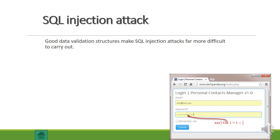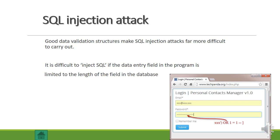Good data value validation structures make SQL injection attacks far more difficult. It is difficult to inject SQL if the data entry field is limited to the length of the field in the database — this is the length check. The field should also be strictly typed and checked to only allow legal characters; quotes and equals signs would not be allowed. This would reject the hacker's input so the attack would not work.